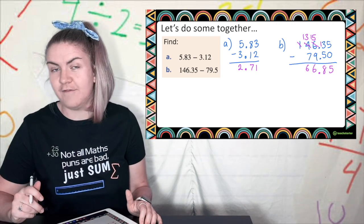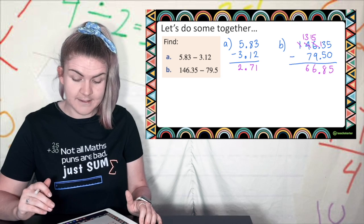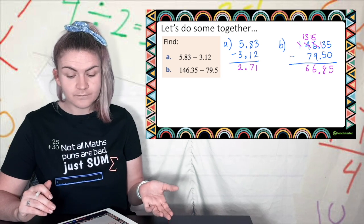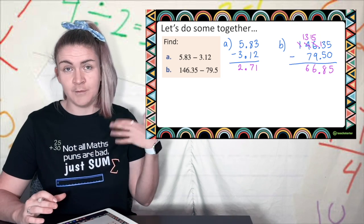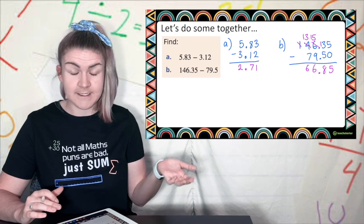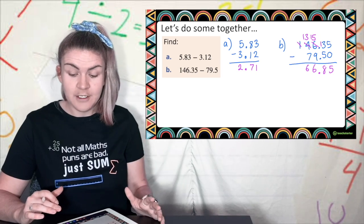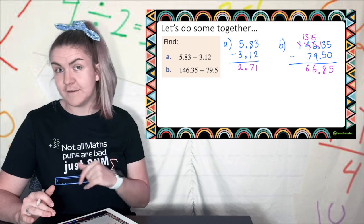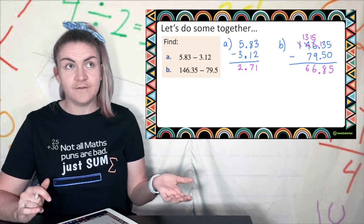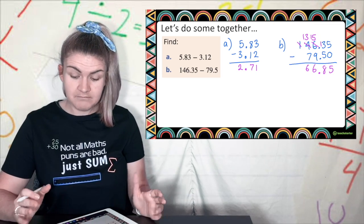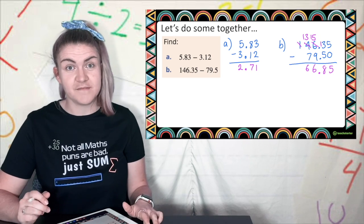So 66.85 is my estimated answer. Now for this one for my reasonableness I don't actually want to calculate 146 take away 79 it's too much in my head so I'm just going to round to 150 take away 80 and 150 take away 80 would be 70 and this is just smaller than 70 so this seems about right.